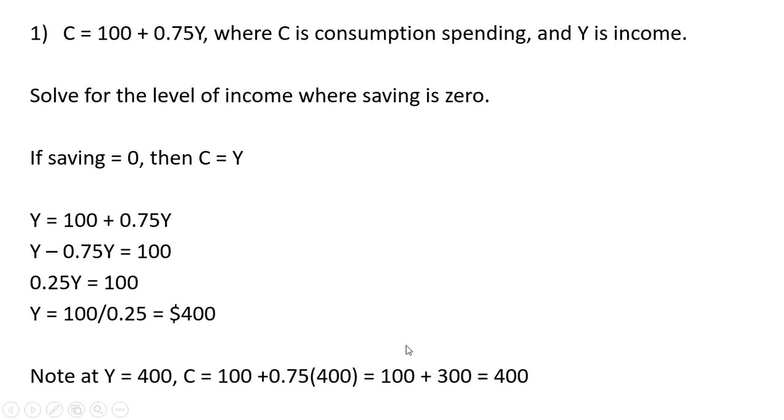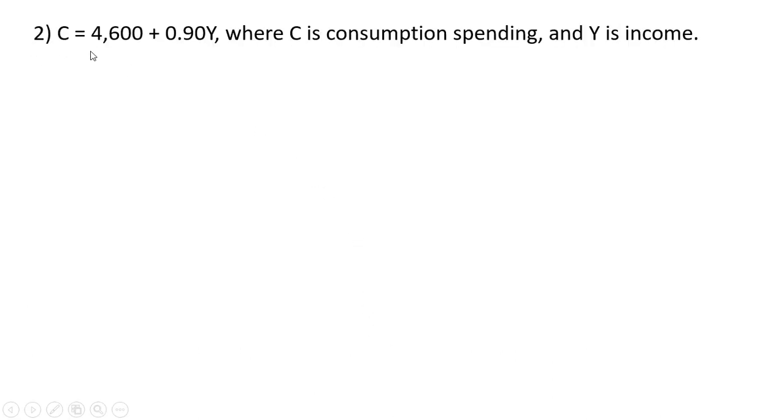Let's do another problem. Here again is a consumption function. We want to find the size of the government spending multiplier. Recognizing in the consumption function the slope here, this parameter in front of the Y term is the marginal propensity to consume.